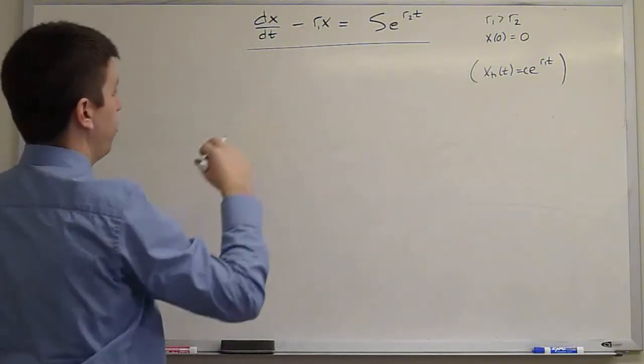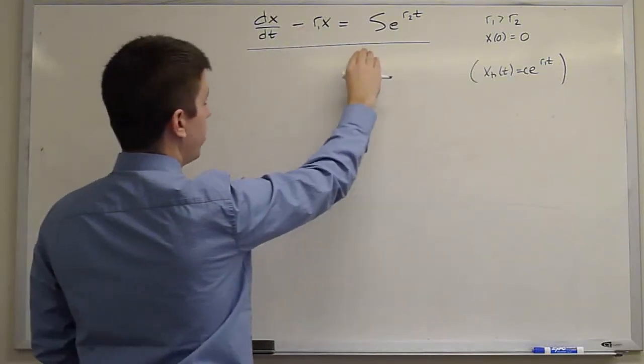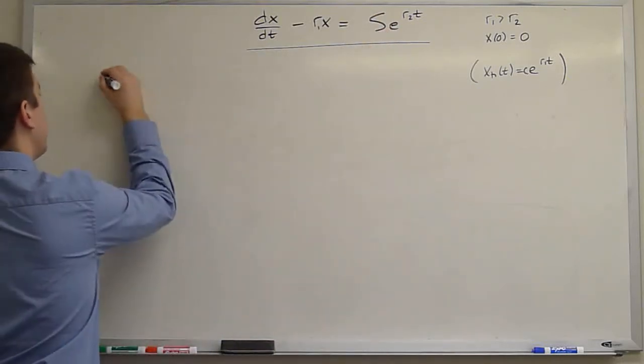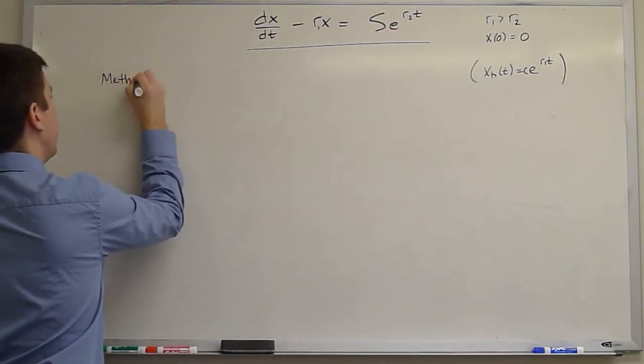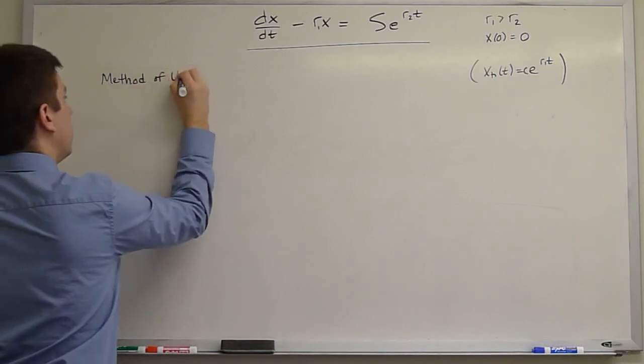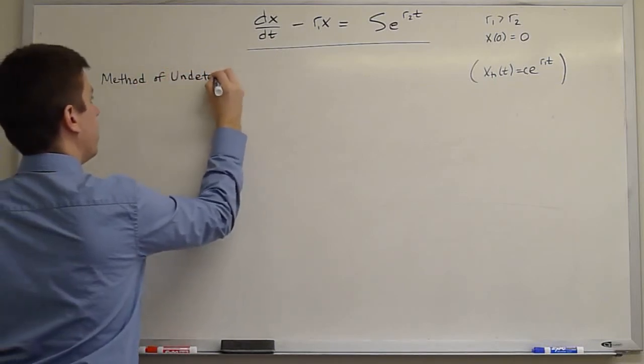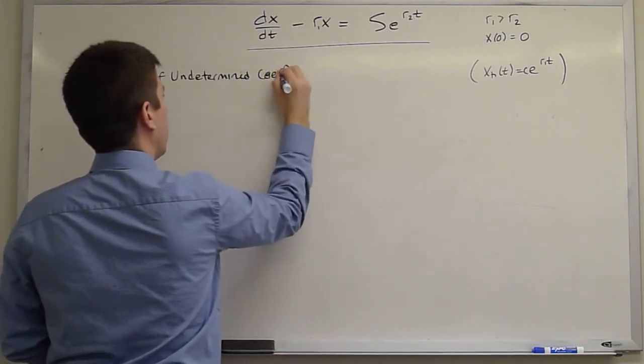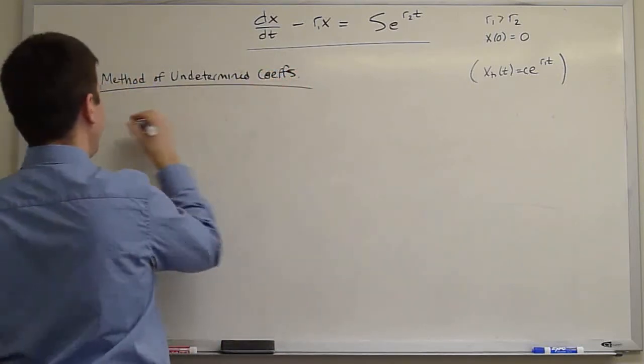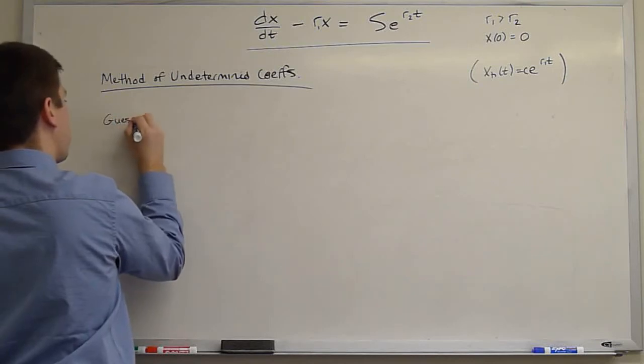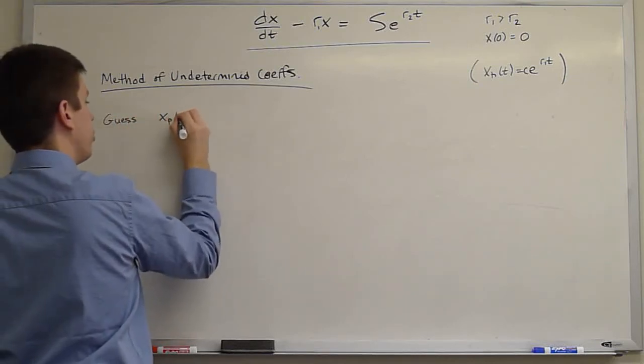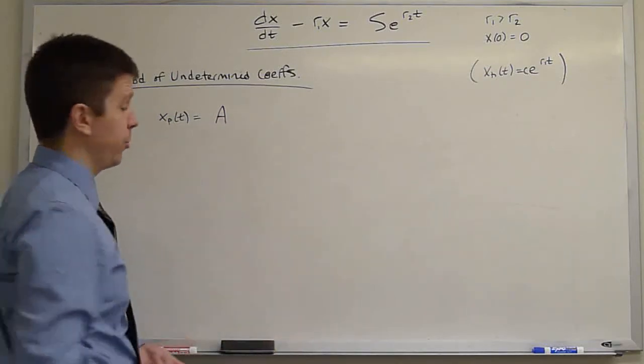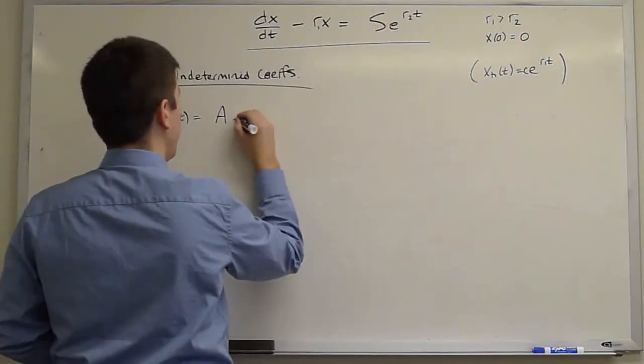Our guess, based on this form, linear operator equals exponential. I'm going to guess, let me just write the method, method of undetermined coefficients. I will guess that the particular solution is capital A, some undetermined coefficient, times e to the R2t.